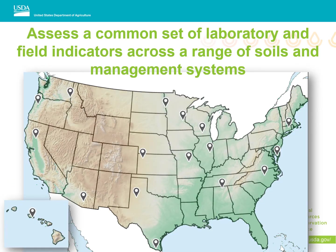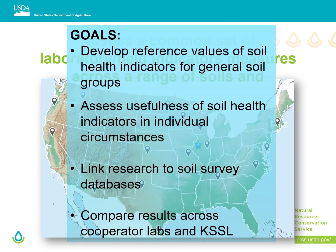For the DSP for Soil Health projects, we wanted to assess a common set of laboratory and field indicators across a range of soils and management systems. The goals were to develop reference values of soil health indicators for general soil groups such as ecological sites or other taxonomic groups, assess the usefulness of soil health indicators in individual circumstances, link research databases to soil survey databases, and compare results across cooperator labs and the Kellogg Soil Survey Lab.